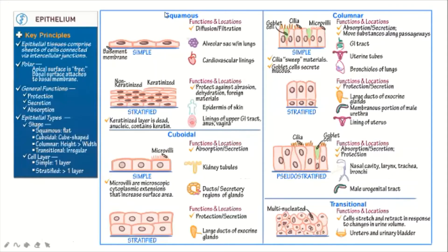For the squamous epithelial tissues, they are flat or almost flat. They could be simple or stratified, meaning they are found in layers. You also have the cuboidal epithelial tissue, whose shape is like cubes. For the columnar type, the cells are taller than they are wide, and they typically have cilia and microvilli. You also have the transitional epithelial tissues, which have an irregular shape.